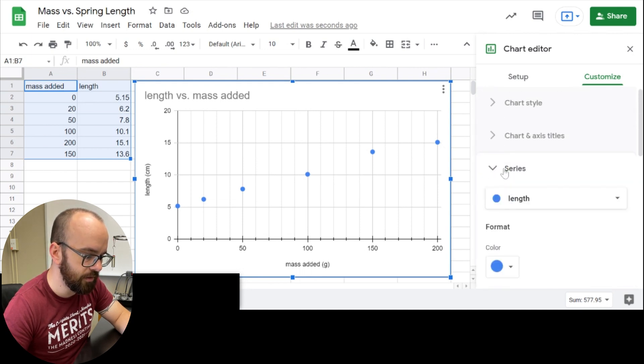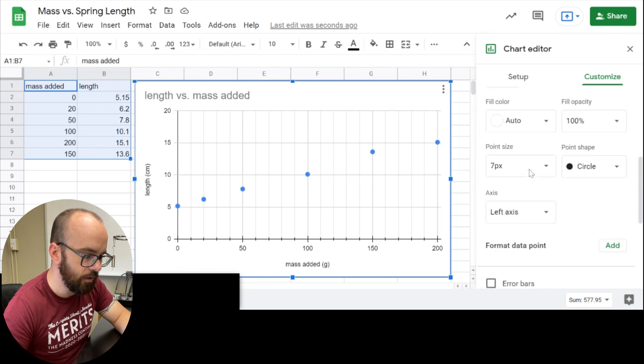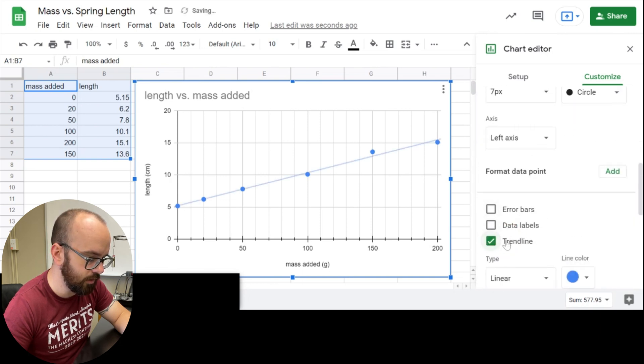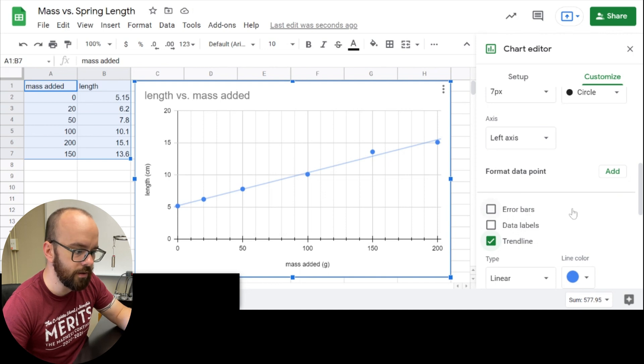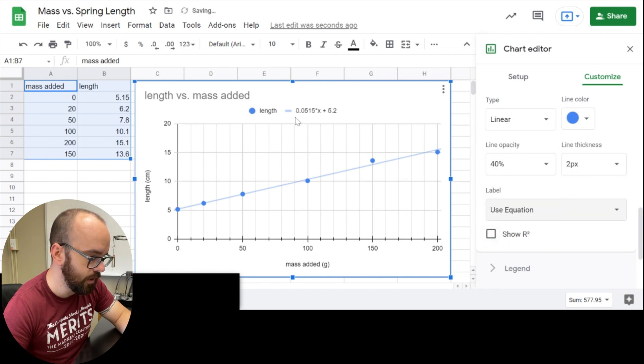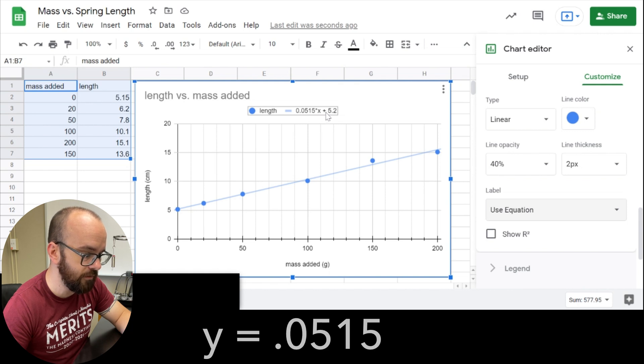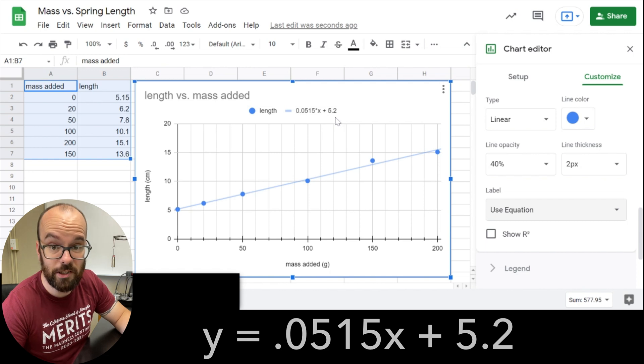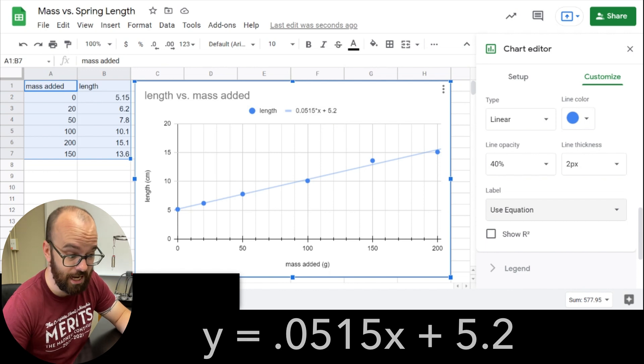I'll click trend line and it'll draw my best fit line. They don't call it best fit. They call it trend line and it looks pretty close to what we had before. Now it doesn't have the equation on there yet. I can add that equation by going down to here and clicking label and clicking use equation. And it gives me my equation right here. Now it doesn't say Y equals, but there's a Y equals in front of this. So my trend line equation is Y equals 0.0515X plus 5.2. That's really close to what we did by hand.